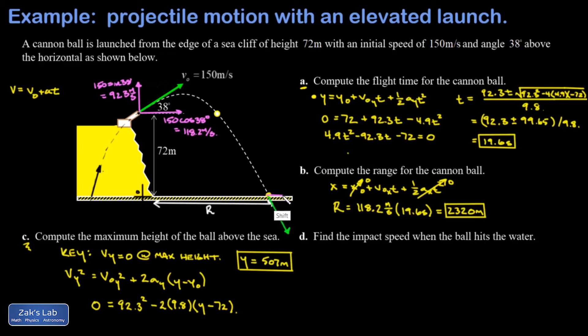Just to visualize that real quick, there's the impact velocity vector, and that's made of a horizontal component—that's vx final—and a vertical component vy final. vx final is the easy one because the x velocity never changes, so I know immediately that that's 118.2 meters per second.